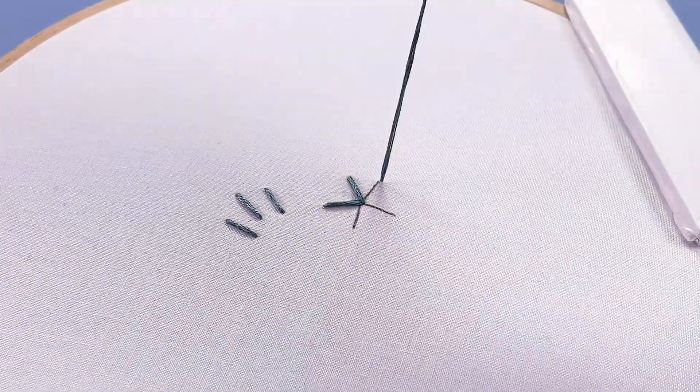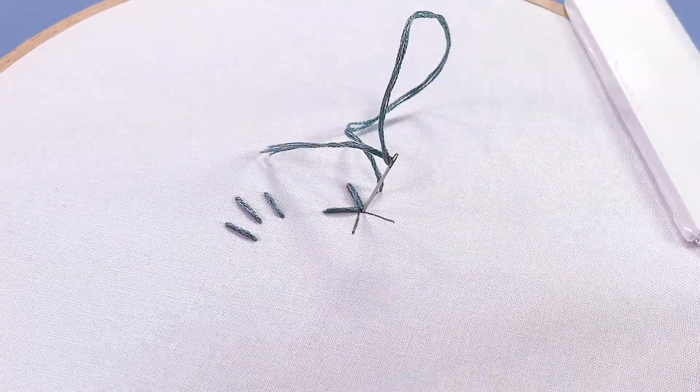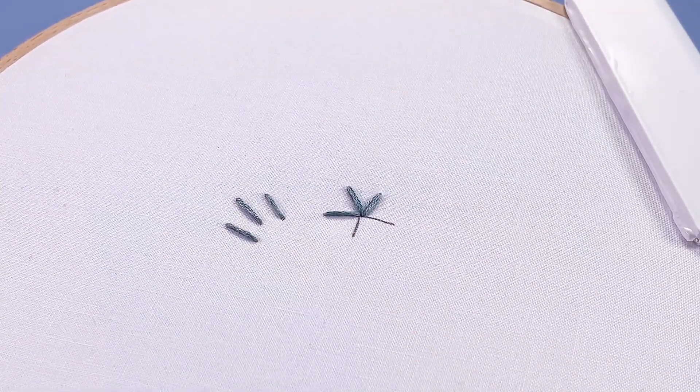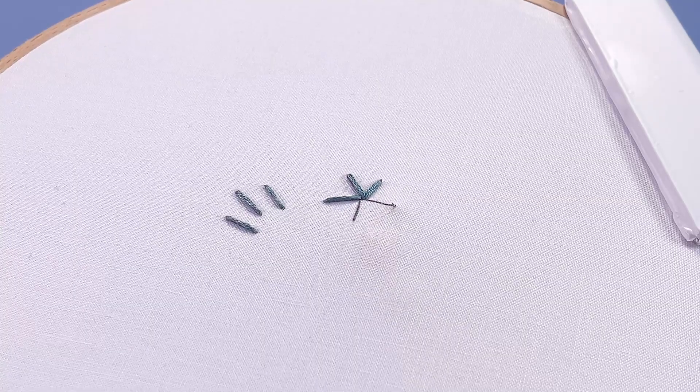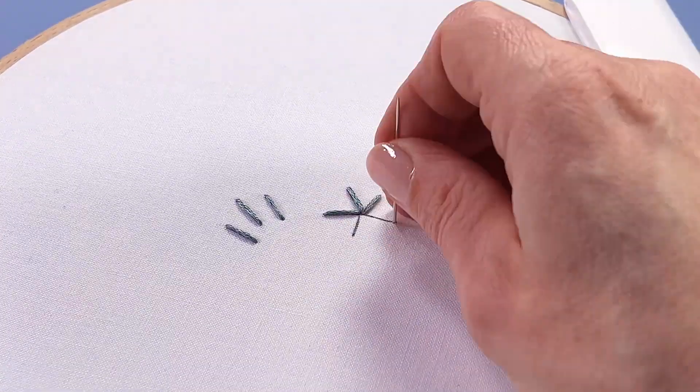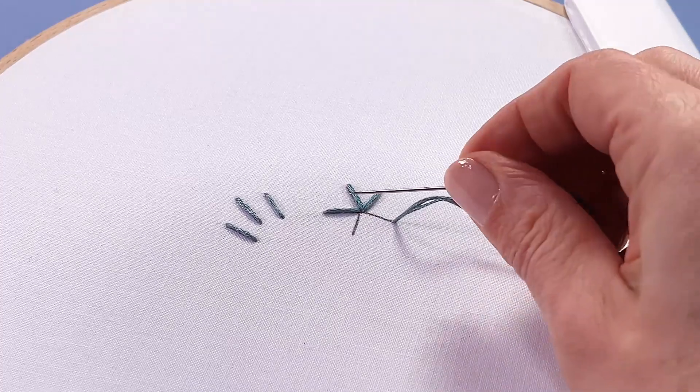So I'm just going to work my way around the star, always poking my needle down at the center. If I want to, for example on this stitch here, I might just poke my needle down slightly to the side.